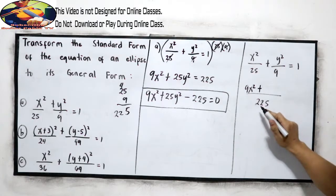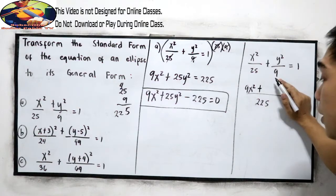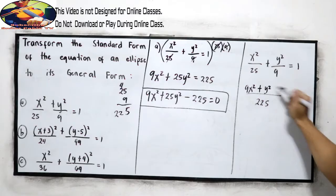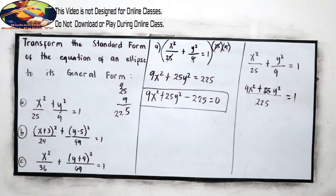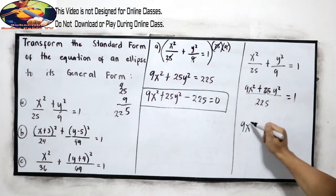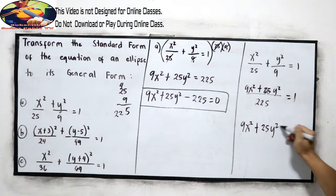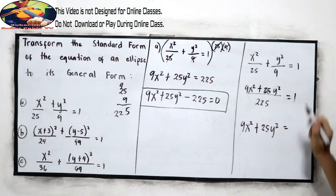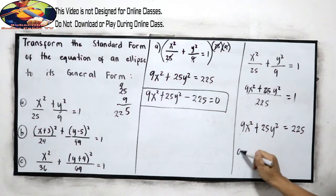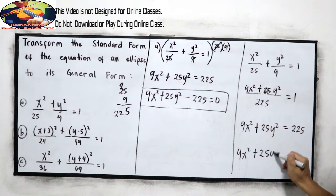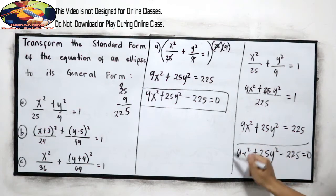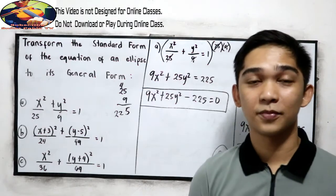So we have 9x squared plus 25y squared is equal to 225 times 1. So 9x squared plus 25y squared minus 225 is equal to 0. This is now our general form. GF.